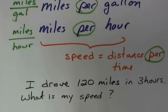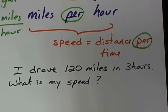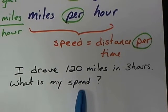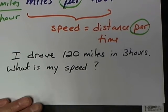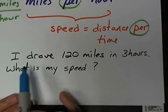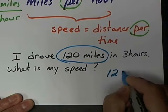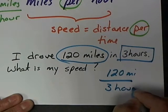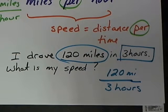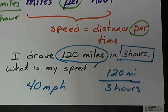An example of a rate problem: I drove 120 miles in three hours. What is my speed? Speed is the same thing as miles per hour. You can tell from the question how to set up the problem. So we find the word 'miles' — that's the number on top. Then we divide by how long it took, three hours. 120 divided by 3 is 40. So we travel 40 miles per hour.